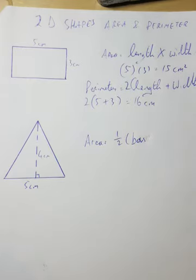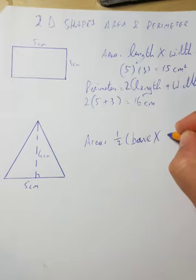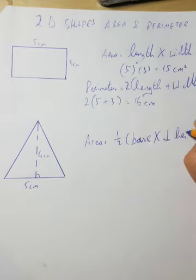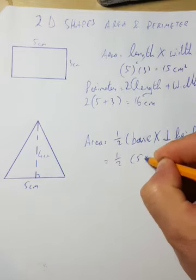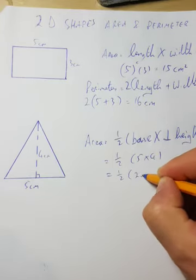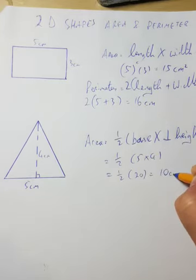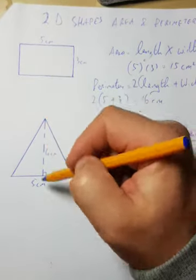Area is equal to half the base by the perpendicular height. So that's going to be a half of five by four. Well, five by four is twenty, so half of twenty is ten centimeters squared. It's always the height perpendicular to the base.